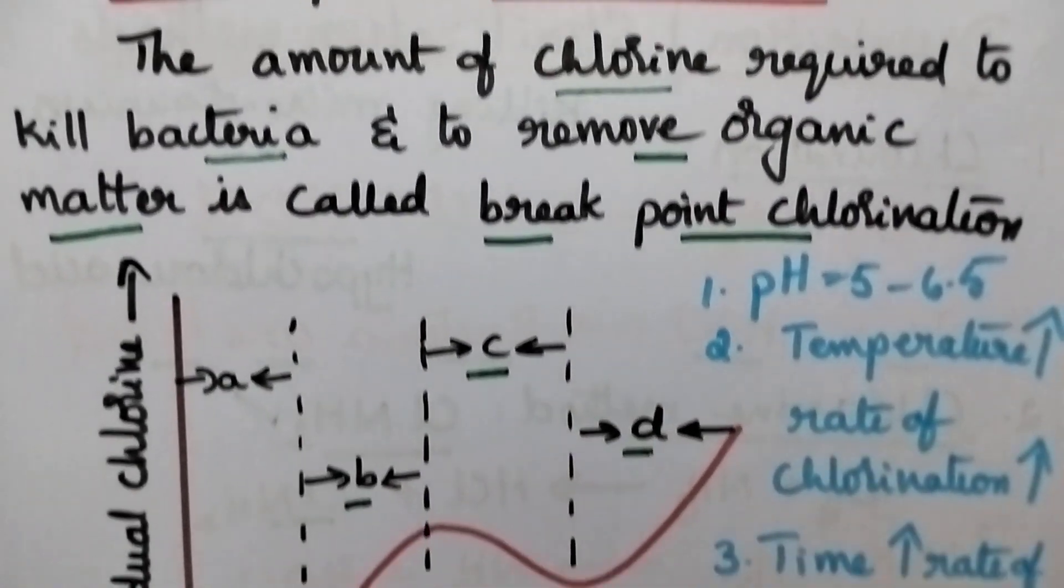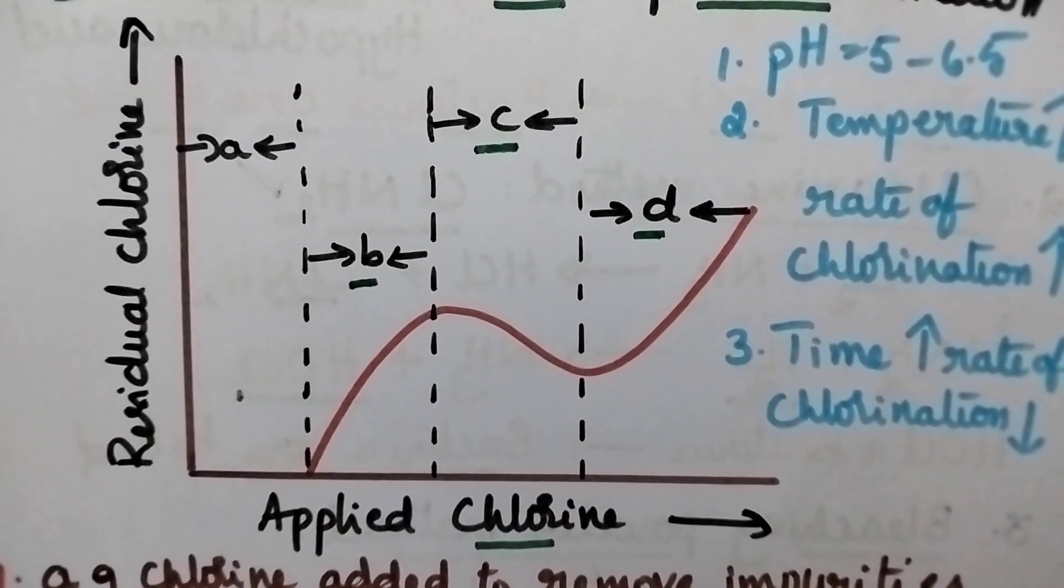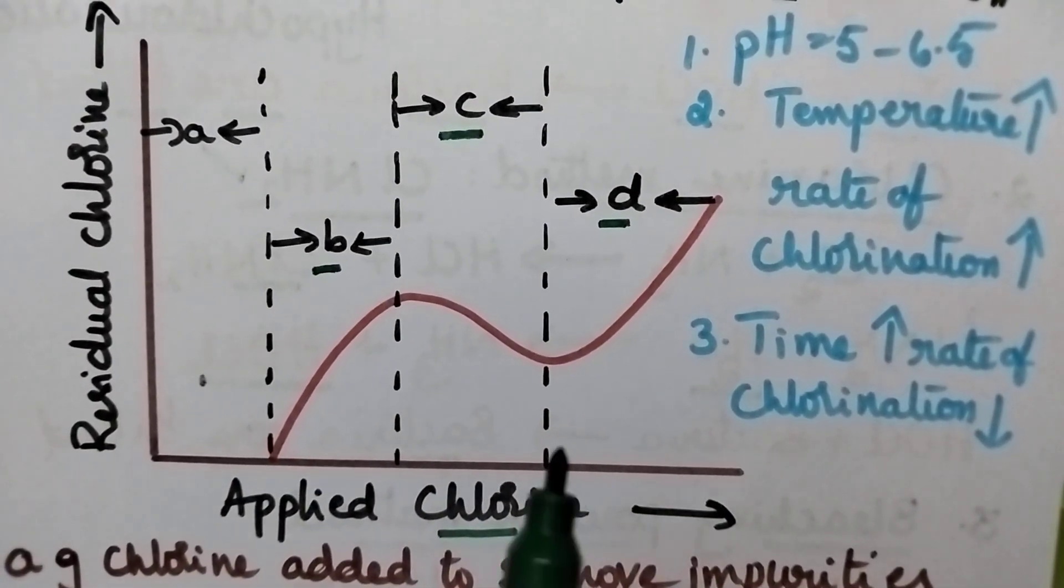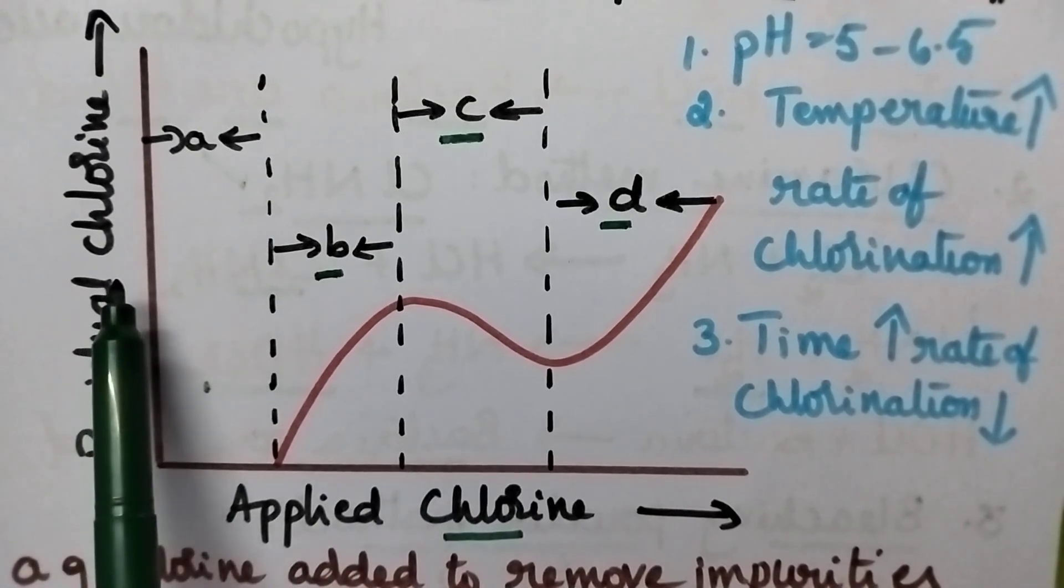To have a better idea about breakpoint chlorination, a graph is drawn between applied chlorine and residual chlorine.